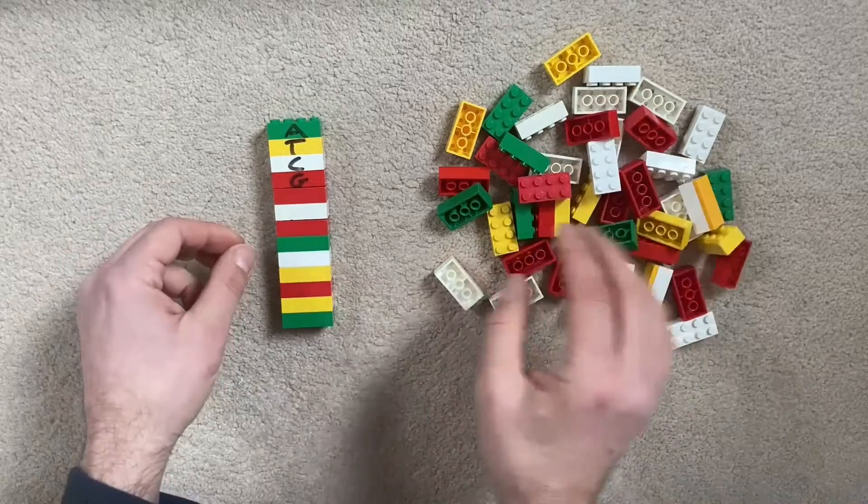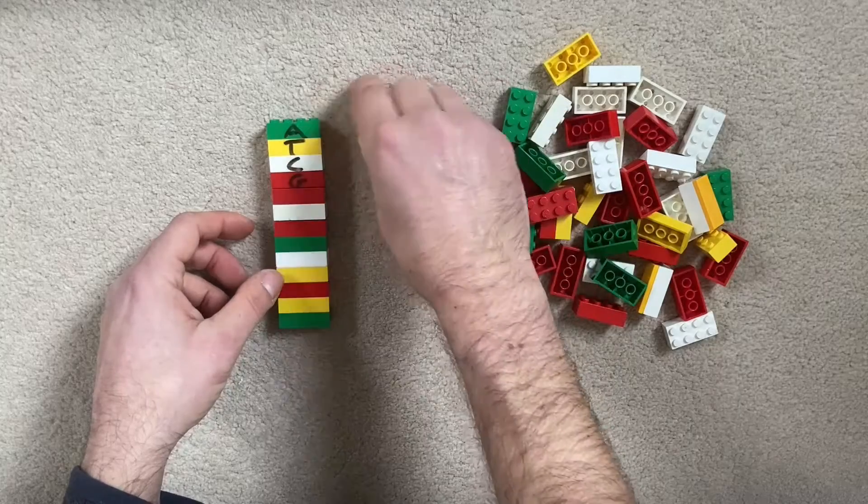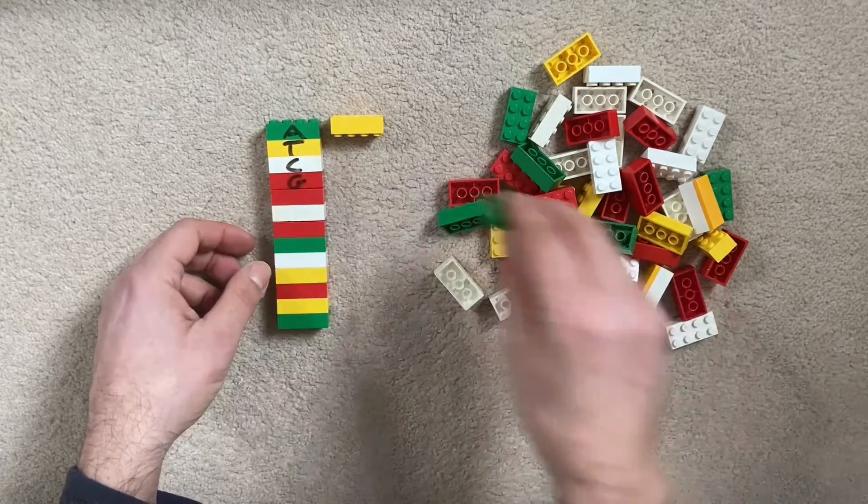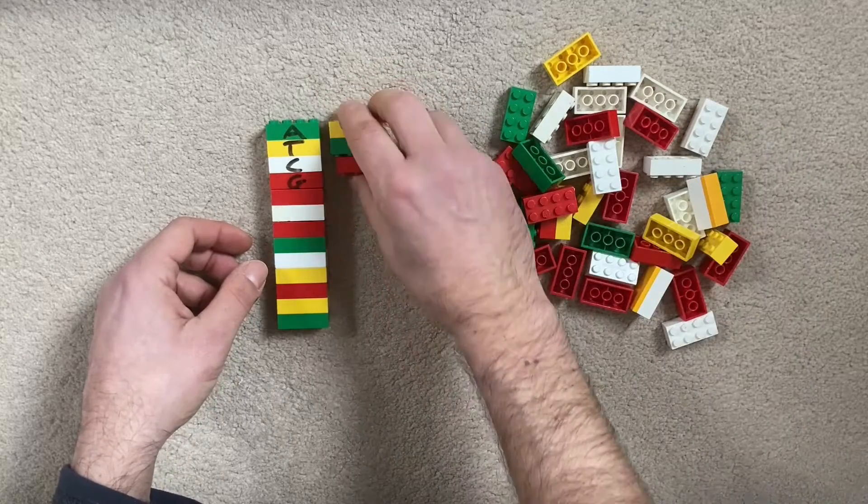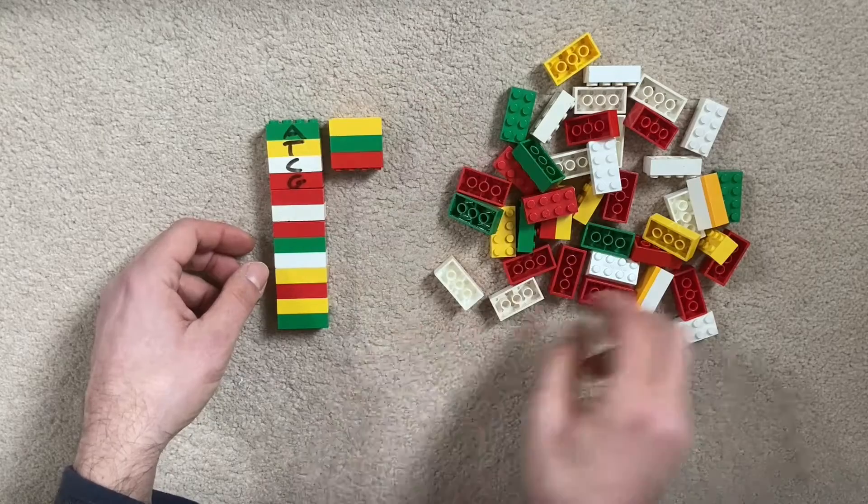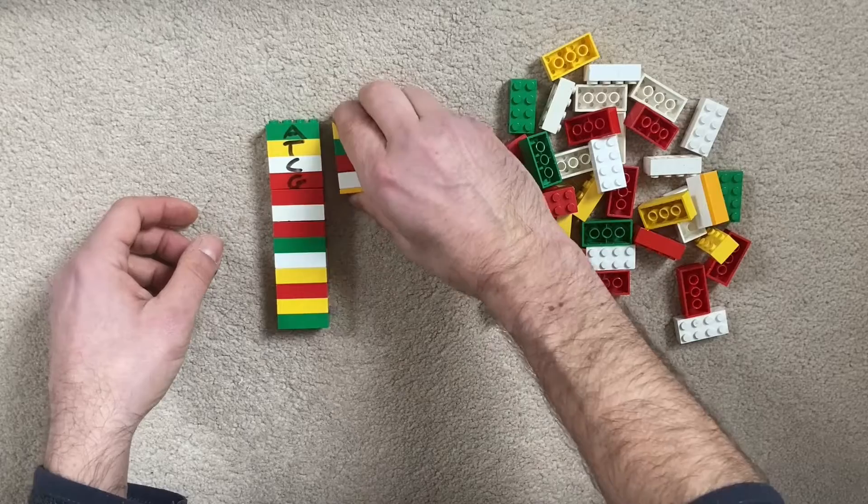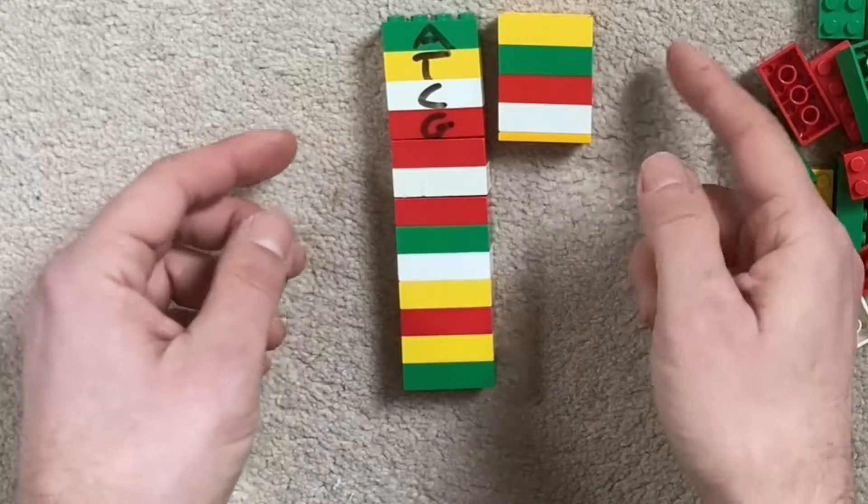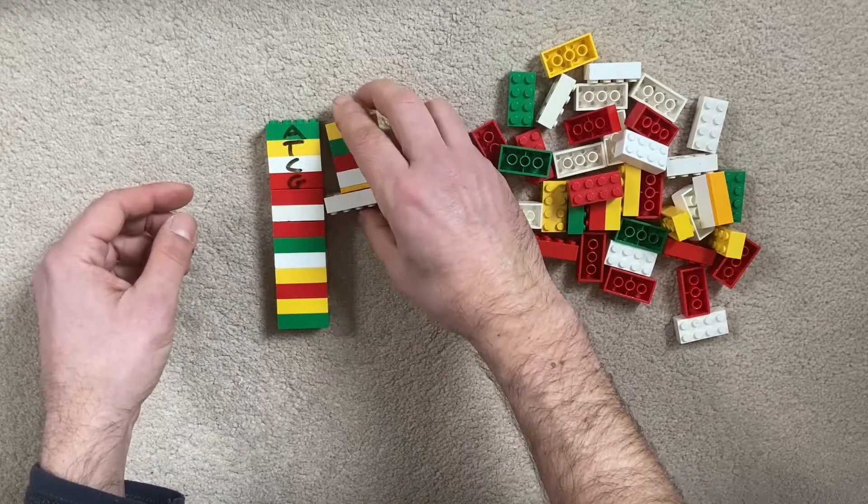So my DNA polymerase, my molecular machinery, it goes, I need a T there, it grabs a T, puts it there. It goes now I need an A, it puts it there. And now I need a guanine and it puts it there. And now I need a cytosine and it might grab one of these modified ones, and it puts it there. And what happens now? Well, this strand can't grow anymore because the next brick won't fit.